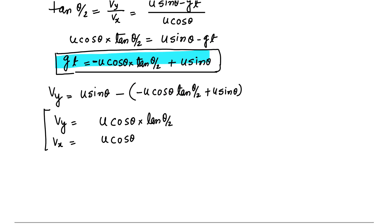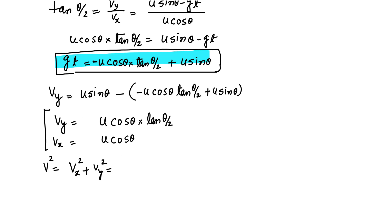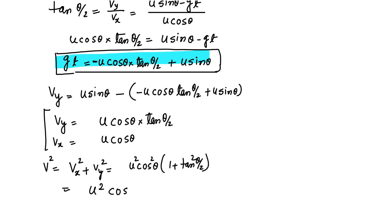Now I can find V². V² = Vx² + Vy² = u² cos²θ + u² cos²θ · tan²(θ/2) = u² cos²θ (1 + tan²(θ/2)) = u² cos²θ · sec²(θ/2). So V² = u² cos²θ · sec²(θ/2). Now I know the velocity at that point.